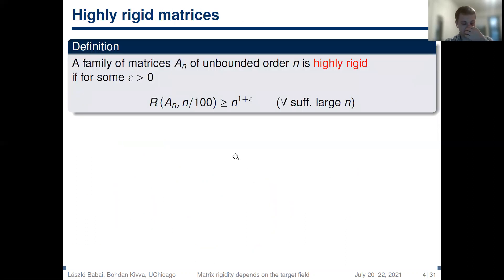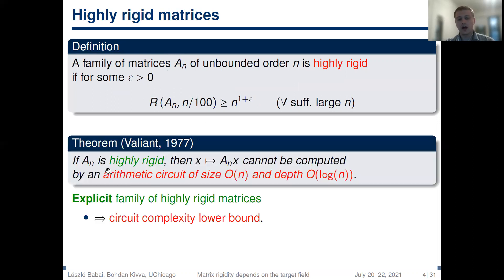Matrix rigidity was introduced as a tool to prove circuit complexity lower bounds. We say that a family of matrices of unbounded order n is highly rigid if there exists a positive constant epsilon such that for any n-by-n matrix in this family, in order to get a matrix of rank at most n over 100, one needs to change at least n to the 1-plus-epsilon entries for any sufficiently large n. Valiant proved that linear functions defined by highly rigid matrices cannot be computed by arithmetic circuits of linear size and logarithmic depth.